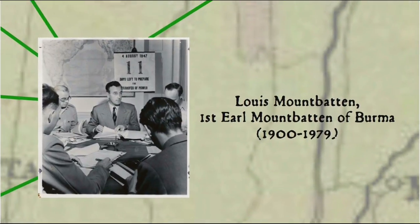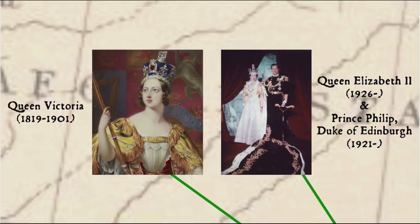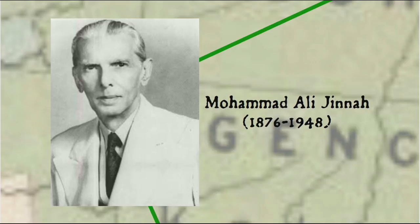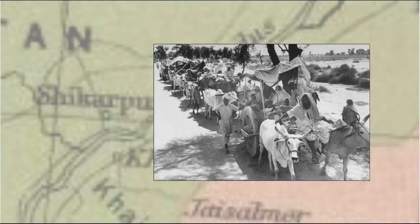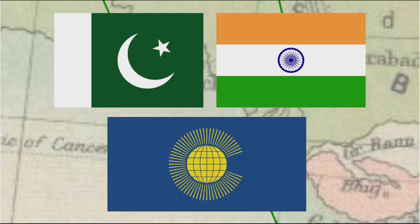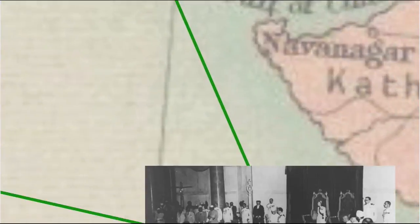Lord Mountbatten — a naval officer, grandson of Queen Victoria, uncle of Prince Philip and second cousin once removed of Queen Elizabeth II — was appointed viceroy of India to oversee independence. And although he and Indian leaders such as Mahatma Gandhi and Jawaharlal Nehru favoured a unified India, Muslim leaders such as Muhammad Ali Jinnah as well as Hindu fundamentalists wanted a separate Muslim state of Pakistan. This was in keeping with the long-standing British mentality of divide and rule. Partition in 1947 became the largest peacetime movement in history — some 17 million people moved to be on the right side of the border, and perhaps one million were killed in the chaos and violence that resulted.